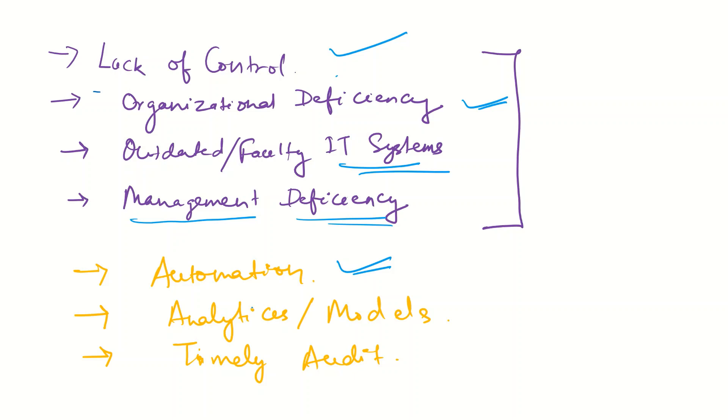The typos and the human error that one would make will not be the case because automation takes care of that. Software takes care of that. Then analytics and models. You can use database analytics and models in order to predict the operational risk incident and then take precautionary measures before it happens. And then finally, timely audit.